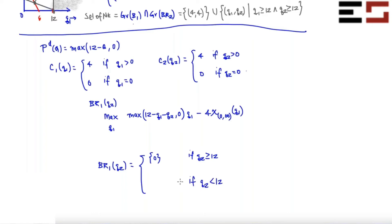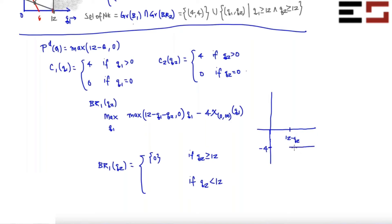Now consider the case where q2 is less than 12. I'm not going to choose more than 12 minus q2, because if I do, the revenue term becomes zero and I still incur the fixed cost of 4. I can do better by choosing zero units of output, which gives profit zero, rather than choosing more than 12 minus q2, which gives profit minus 4. So my profit function will drop after 12 minus q2, and at q1 equal to 0 my profit is zero.